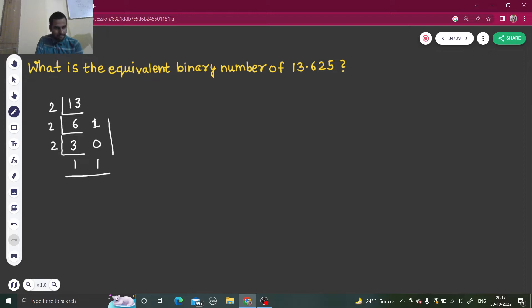There we go. We can write 13, which is a decimal number, starting from bottom so 1101. We have treated 13 as a separate decimal number and then converted it to binary.